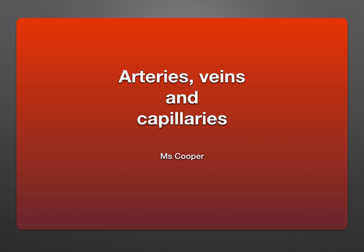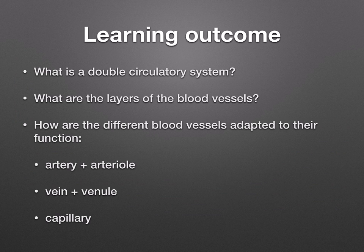In this topic, we're going to look at the blood vessels: the arteries, veins, and capillaries. By the end of this topic, you should be able to answer the questions: what is a double circulatory system, what are the layers of the blood vessels, and how are the different blood vessels adapted to their functions? We're going to look at the artery, arteriole, vein, venule, and capillary.